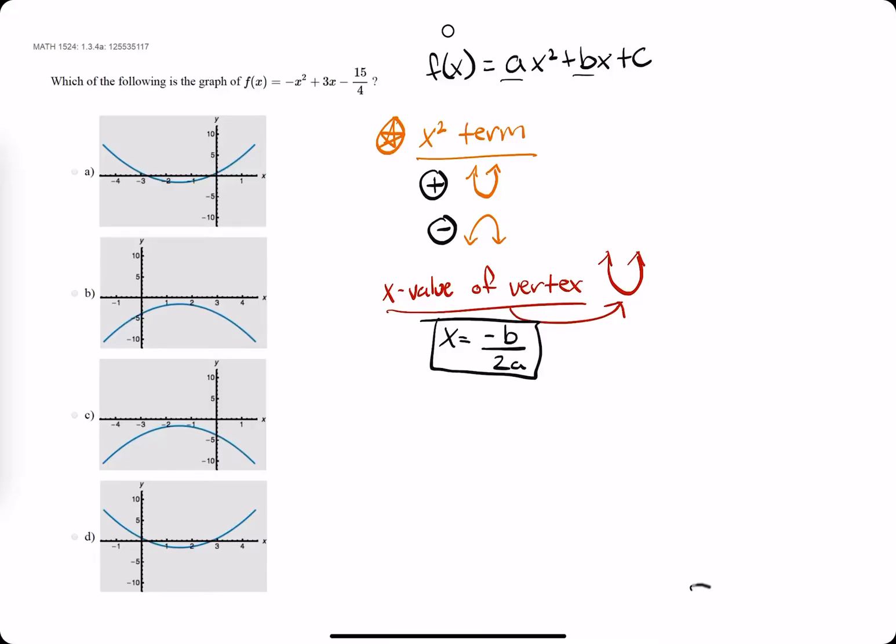Okie dokie. So in this problem they ask, which of the following is the graph of f(x) equal to negative x squared plus 3x minus 15 fourths?